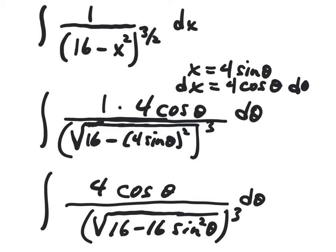Under the square root radical, if we were to factor out a 16, we would have 16 parentheses 1 minus sine squared theta. Let's check that out.